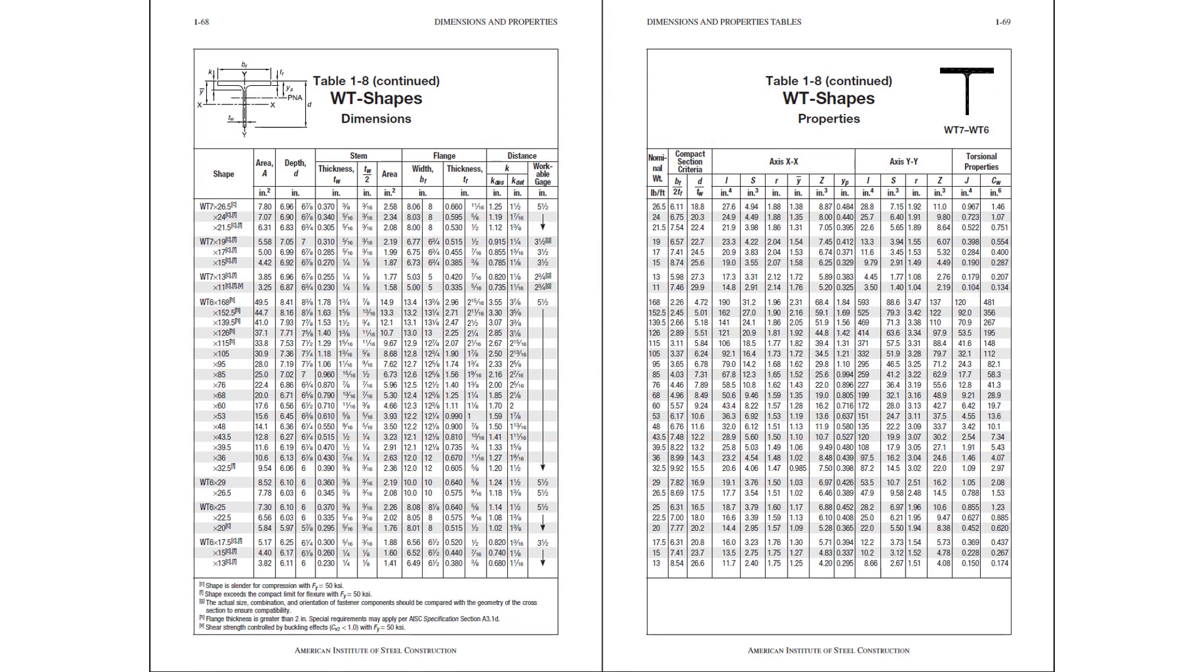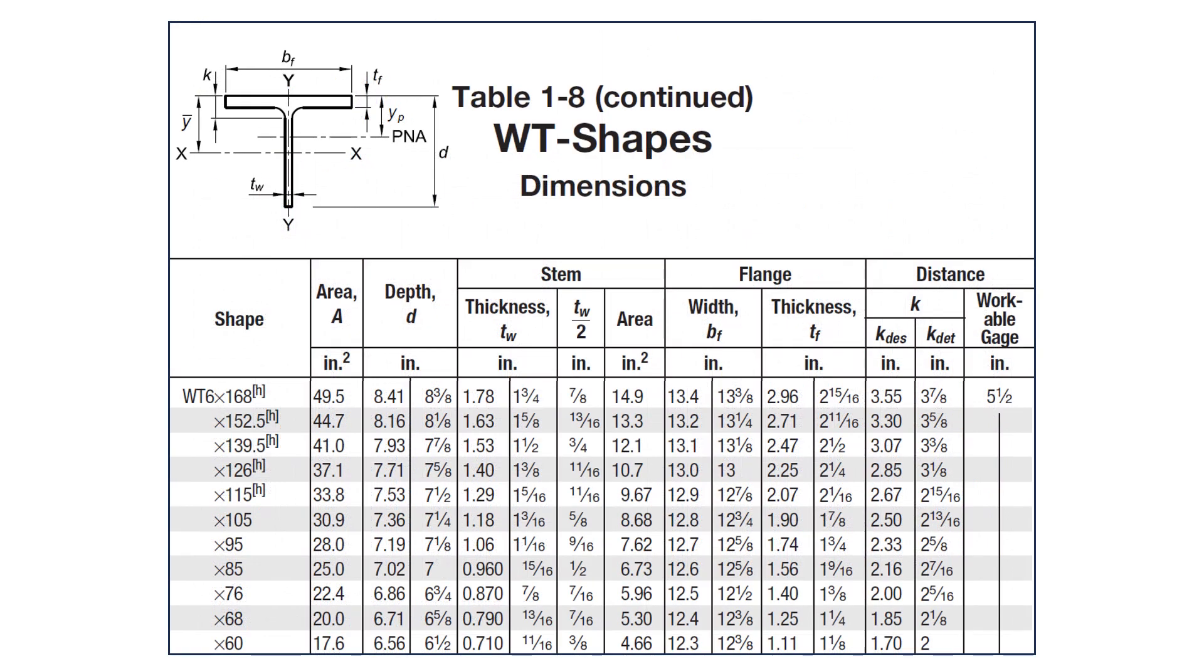Next, we'll refer to table 1-8 of the manual where we can find the section properties for WT shapes. And zooming in, you can see that for the WT6x95, the cross sectional area is 28.0 inches squared and the flange thickness is 1.74 inches.